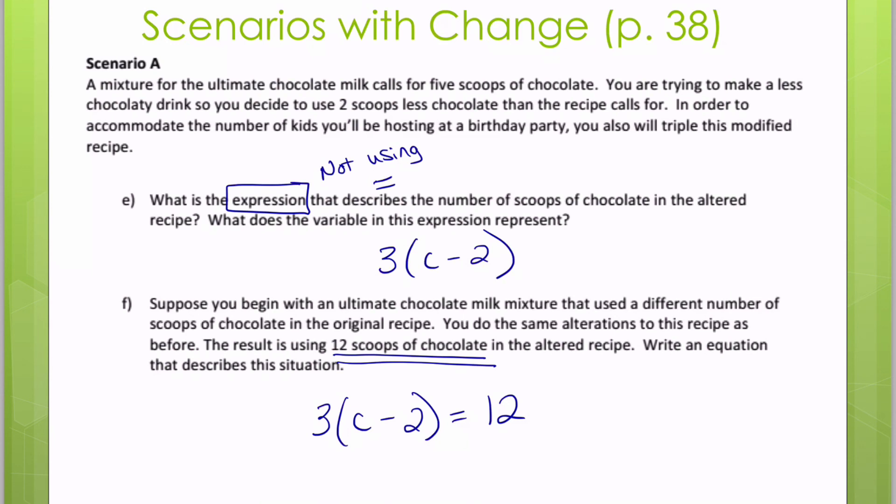By the way, if you're curious, what does, so not in F, but back, if we go back to E for a second, what does our C represent here? Before you try solving anything or anything like that, remember, they already told us in our original problem that our original C was five scoops.